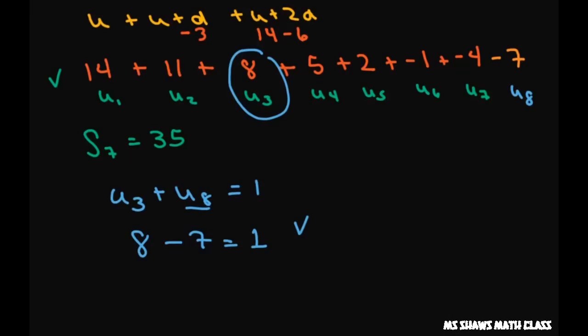So we did get the correct term that our first term is 14 and our common difference is negative 3. And that's it. Thank you. Have a nice day. Bye-bye.